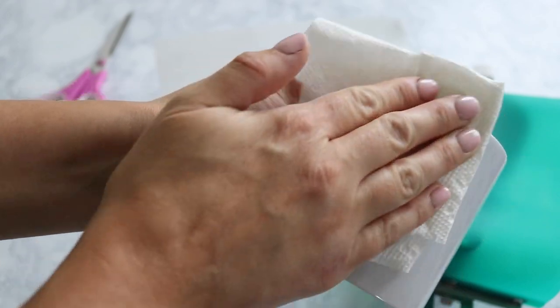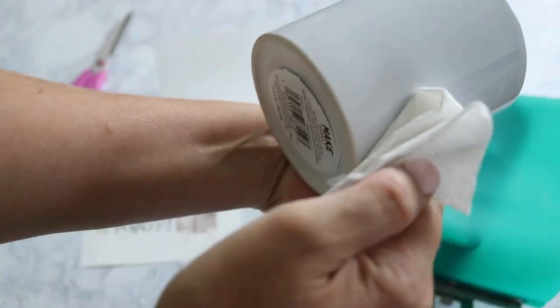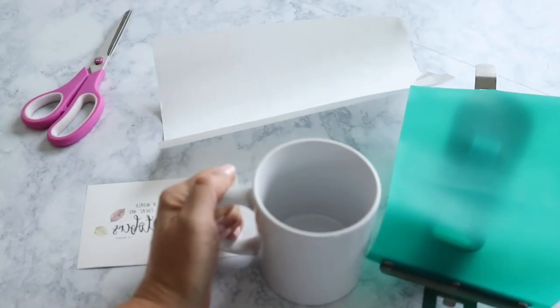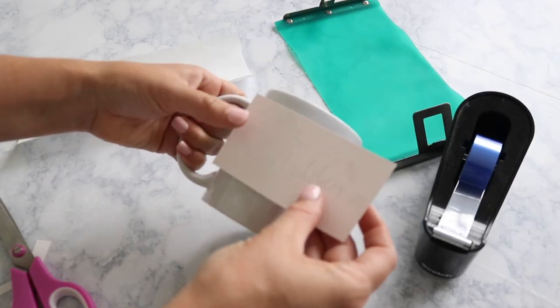Alright, we're going to get this completely cleaned off with a little bit of rubbing alcohol. You just want to get all the fingerprints and oils and dust off of it so it'll have a clean slate for the sublimation.